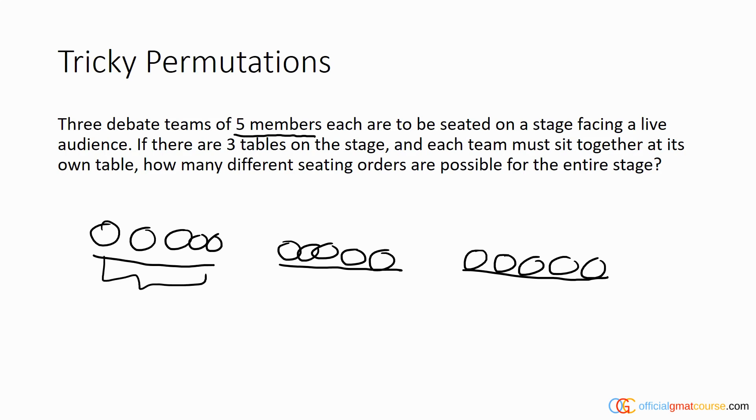Each of these seatings with five members would be 5×4×3×2×1 for the permutation, which is the same as five factorial. So each of these seatings is five factorial.